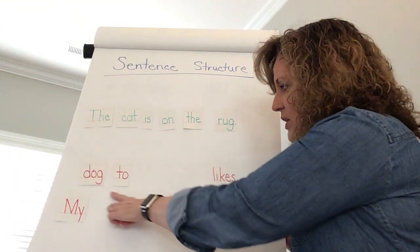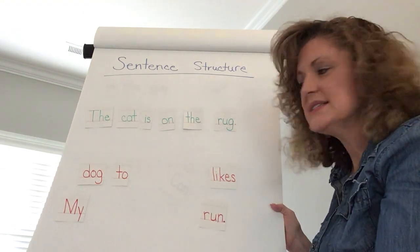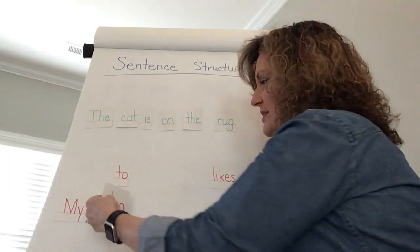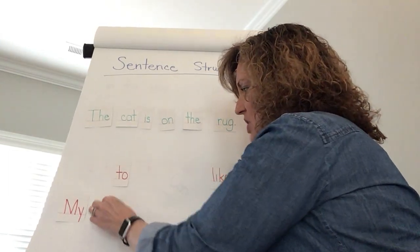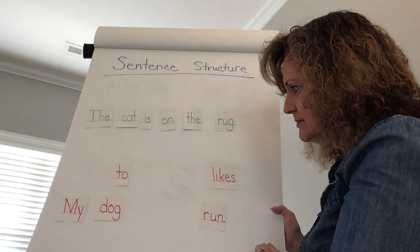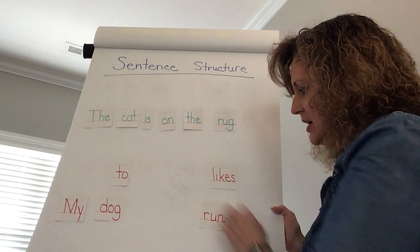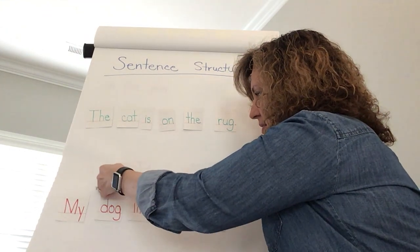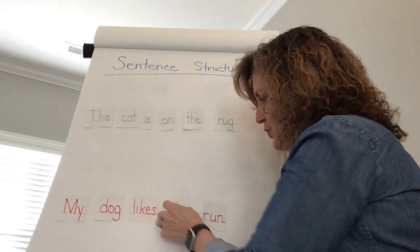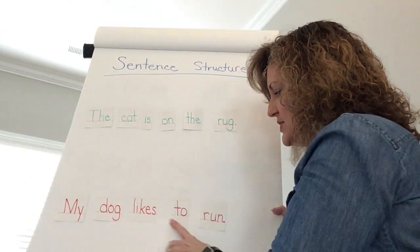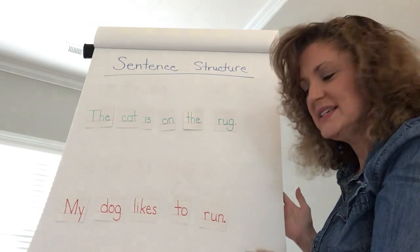So which of the words that are left could be the subject of my sentence? Well the word dog is a noun. So let's talk about my dog. My dog. What does my dog and run? My dog likes to run. Let's reread our sentence and see if it makes sense. My dog likes to run. Great sentence.